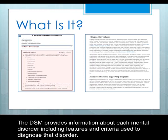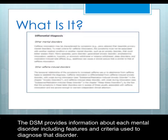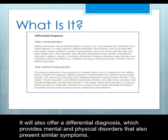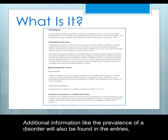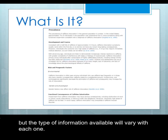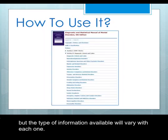The DSM provides information about each mental disorder, including features and criteria used to diagnose that disorder. It will also offer a differential diagnosis, which provides mental and physical disorders that also present similar symptoms. Additional information, like the prevalence of a disorder, will also be found in the entries, but the type of information available will vary with each one.